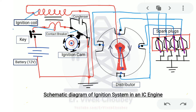As the ignition cam rotates, its upper edge pushes the contact breaker, causing the contact to open. Just as we saw — if current is passing through a coil and suddenly a switch opens up, a huge amount of voltage is generated across the inductor. The same thing happens at this coil. Because of the change in current, an EMF is generated across the primary coil, and a time-varying magnetic field is also generated. By transformer action — mutual induction — the secondary coil links up with the primary one.